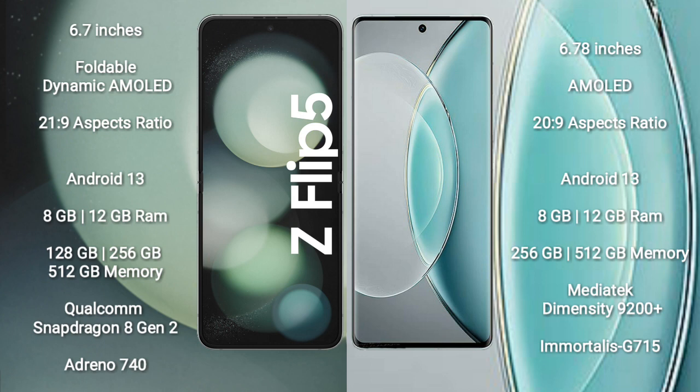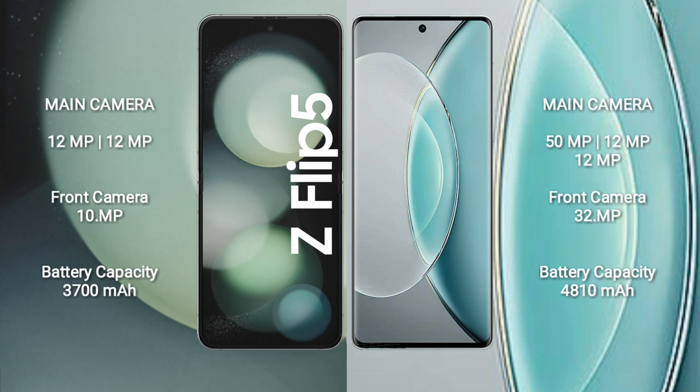Samsung Galaxy Z Flip 5 comes with 8GB or 12GB RAM and 128GB, 256GB, or 512GB internal storage, powered by a Qualcomm Snapdragon 8 Gen 2 processor with GPU Adreno 740. Vivo X90s comes with 8GB or 12GB RAM and 256GB or 512GB internal storage, powered by a MediaTek Dimensity 9200 Plus processor with GPU Mali-G750.